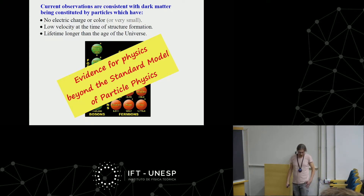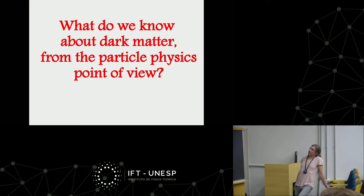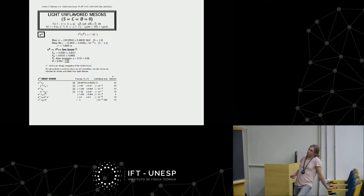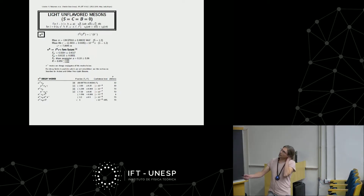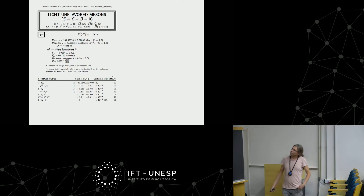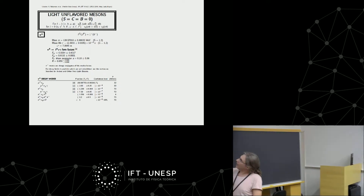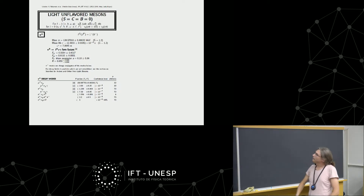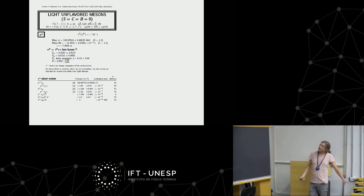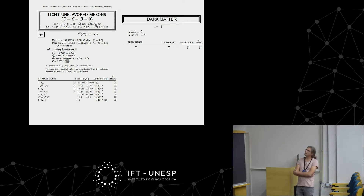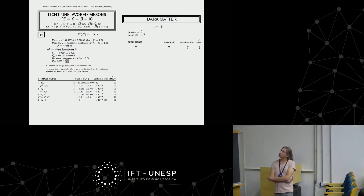This is why particle physicists are interested in dark matter: there could be a connection with BSM physics — otherwise it would just be a problem for astronomers. If dark matter is a new particle, what do we know about it? For known particles, one consults the Particle Data Group booklet containing mass, lifetime, quantum numbers, spin, isospin, etc. So far there is no such page for dark matter: we don't know whether it has spin zero, one-half, one, or higher.